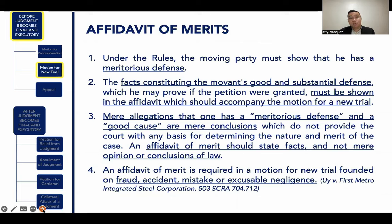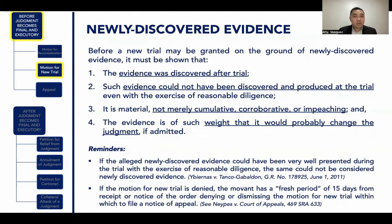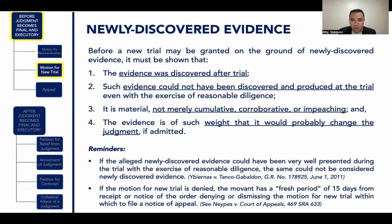The affidavit of merits is required if your motion for new trial is founded on fraud, accident, mistake, or excusable negligence. For newly discovered evidence, it must be shown that the evidence was discovered after trial and could not have been discovered and produced at trial even with the exercise of reasonable diligence. The newly discovered evidence must be material and not merely cumulative, corroborative, or impeaching, and of such weight that it would probably change the judgment if admitted. If the newly discovered evidence could have been presented during trial with the exercise of reasonable diligence, it cannot be considered newly discovered evidence.